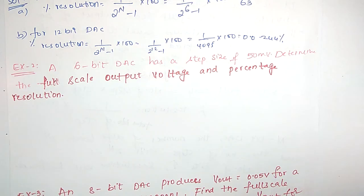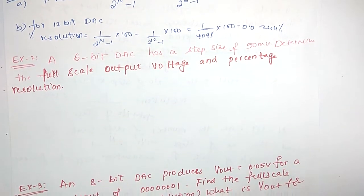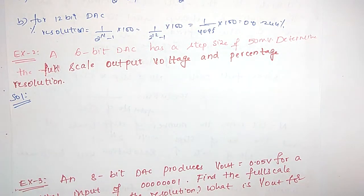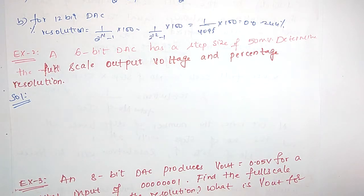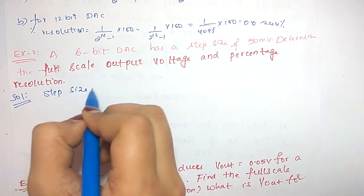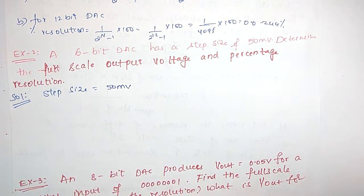So this is one type of question — given the number of bits, find the resolution, which is very easy. The next kind of question is: a 6-bit DAC has a step size of 50 millivolts; determine the full scale output voltage and percentage resolution.